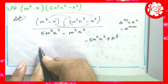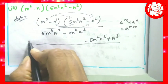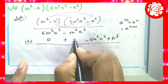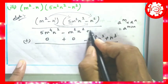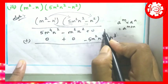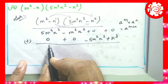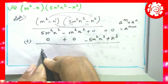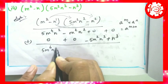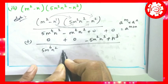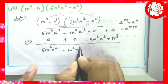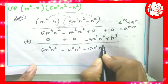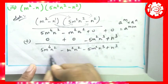This term is not the previous term. Adding: 5m⁴n² minus m²n² minus 5m²n³ plus n³.